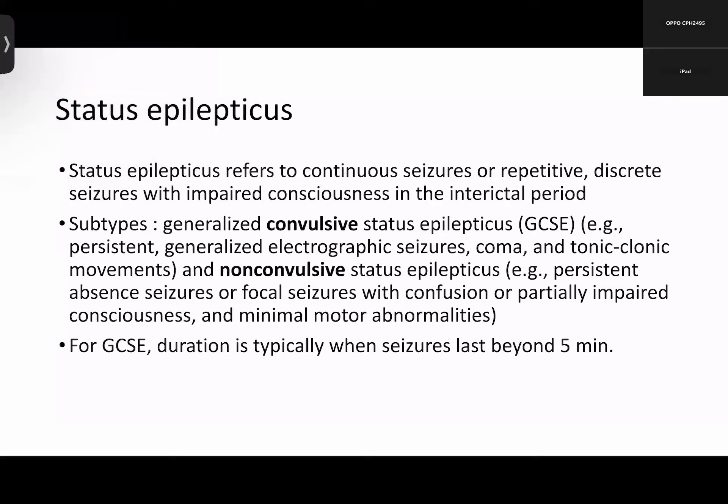Status epilepticus refers to continuous seizures or repetitive discrete seizures with impaired consciousness in the interictal period. It can be generalized convulsive status epilepticus — that is, persistent generalized electrographic seizures, coma or tonic-clonic movements — and non-convulsive status epilepticus, which can be an absence seizure or focal seizure with confusion or partially impaired consciousness and minimal motor activities.